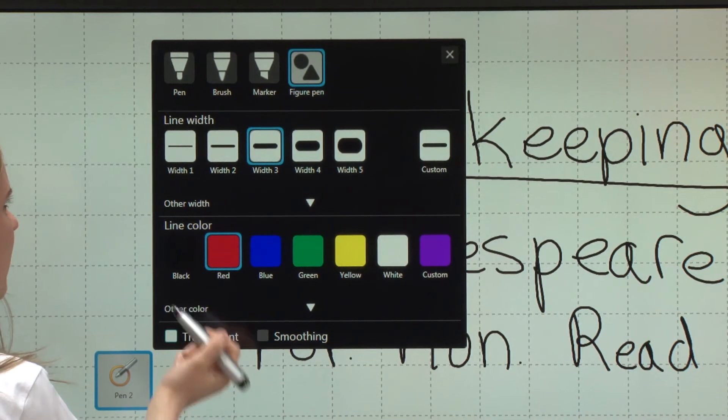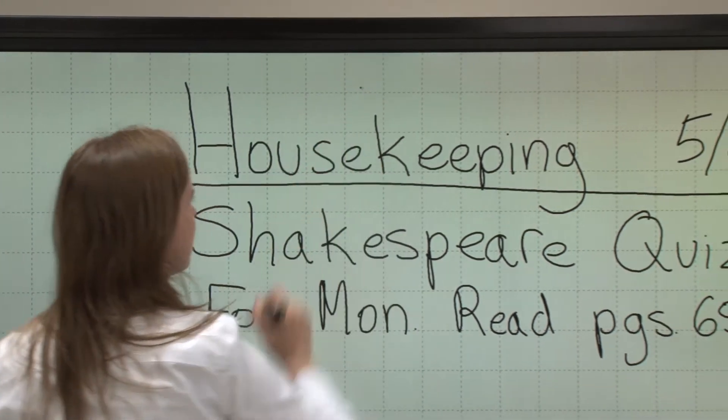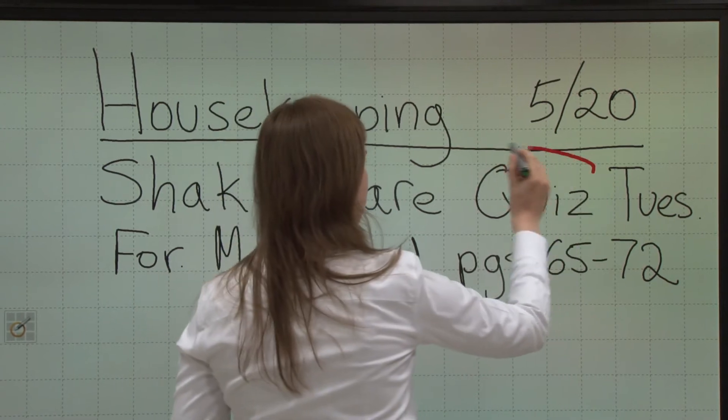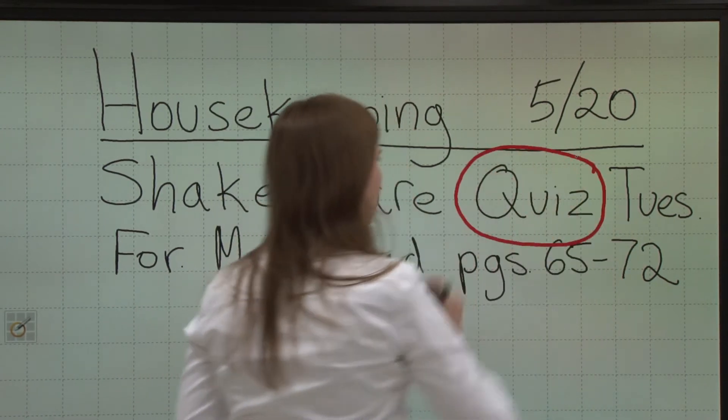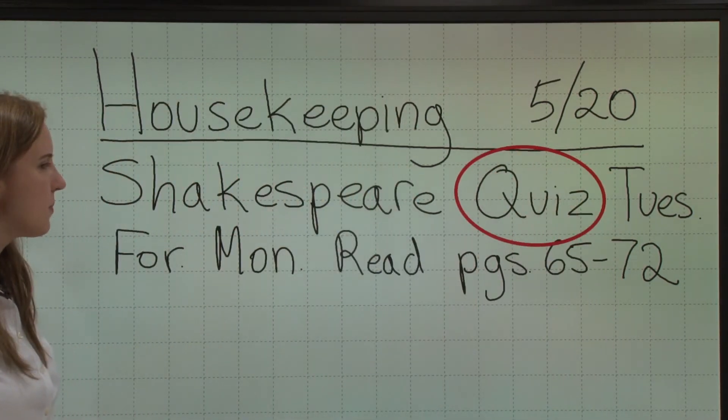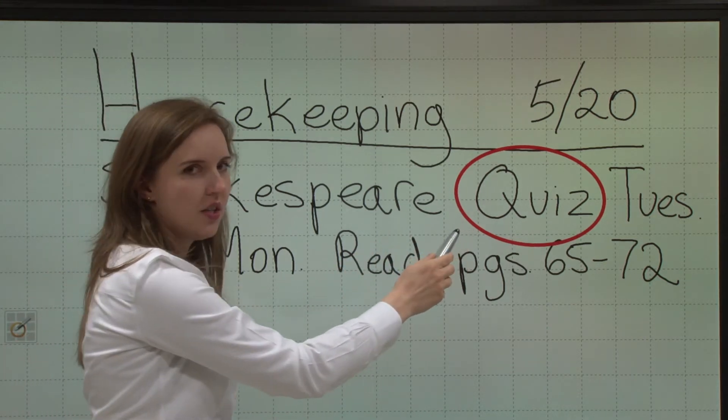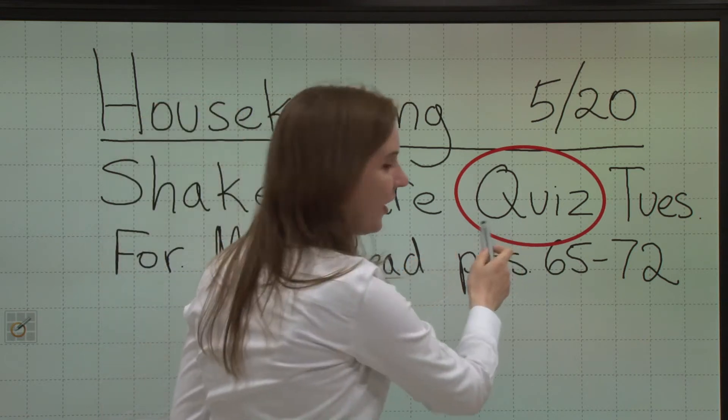We'll choose a width of three. We'll keep it as red. And let's say I want to make a circle around the word quiz. The Aquos board in pen software automatically recognizes the shape and turns it into an oval here.